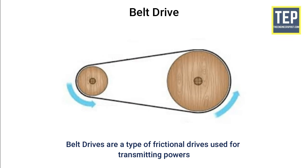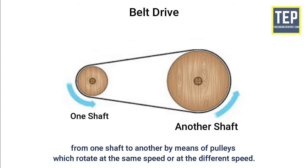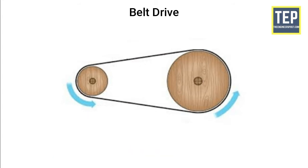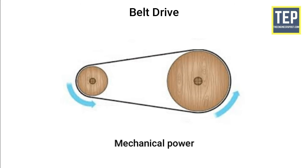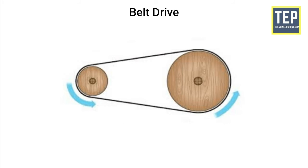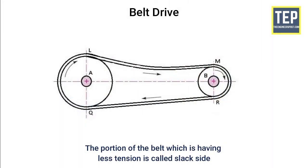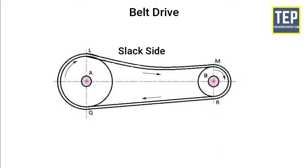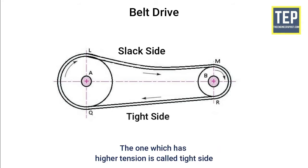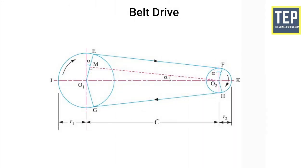Belt drives transmit power by means of pulleys which rotate at the same speed or at different speeds. It consists of two pulleys over which an endless belt is passed. The mechanical power or rotary motion is transmitted from the driving pulley to the driven pulley. The portion of the belt with less tension is called the slack side, and the one with higher tension is called the tight side.